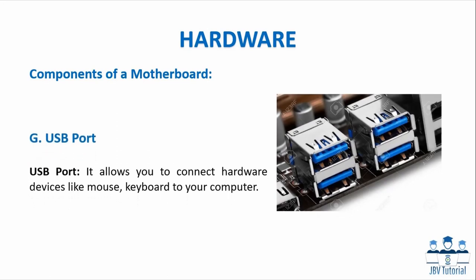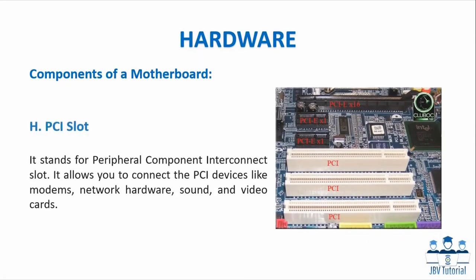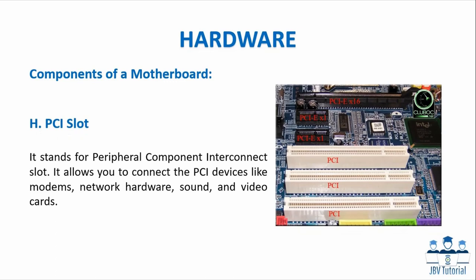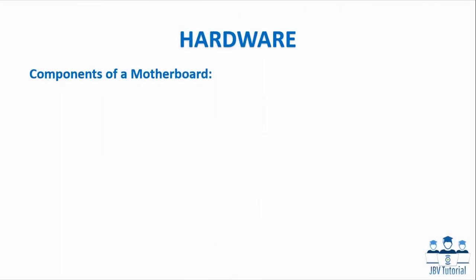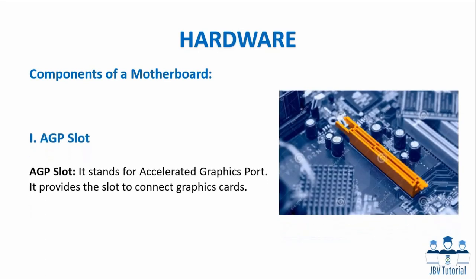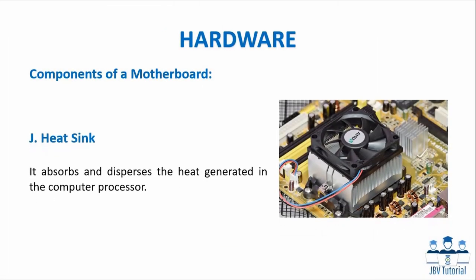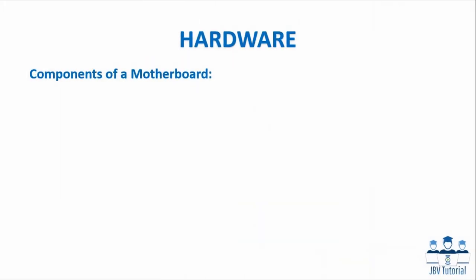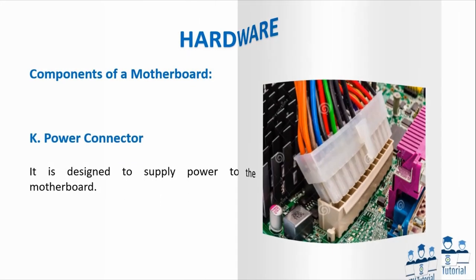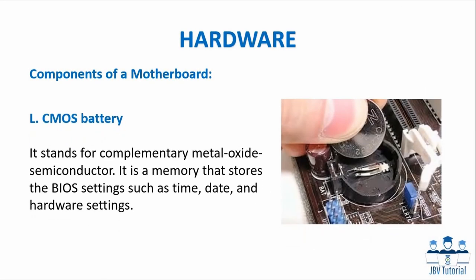USB Port: It allows you to connect hardware devices like a mouse and keyboard to your computer. PCI Slot: It stands for Peripheral Component Interconnect Slot and allows you to connect PCI devices like modems, network hardware, sound, and video cards. AGP Slot: It stands for Accelerated Graphics Port and provides the slot to connect graphics cards. Heat Sink: It absorbs and disperses the heat generated in the computer processor. Power Connector: It is designed to supply power to the motherboard. CMOS Battery: It stands for Complementary Metal Oxide Semiconductor and is a memory that stores the BIOS settings, such as time, date, and hardware settings.